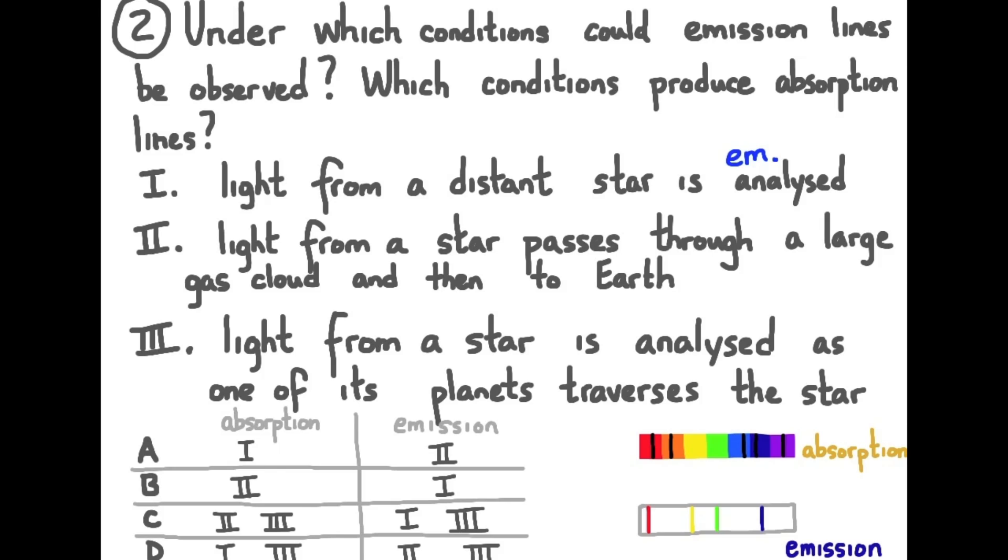In condition one, light is coming from a source, the star. So light of particular frequencies will be produced. We'll see specific colored lines depending upon the composition of the star. Likely hydrogen lines and helium lines. We're going to see an emission spectrum.